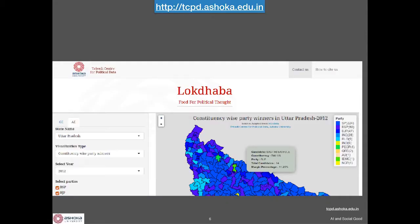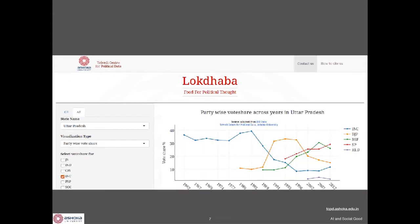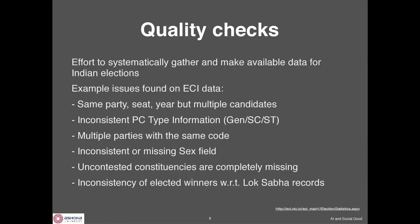There are maps, graphs, and so on, but behind it all is a lot of systematic quality checking of the data. For example, when we put together all the Election Commission data, we find inconsistencies like the same party, same election, same constituency having multiple candidates from the same party — which is not possible. So they have some data entry error or a problem in the ingestion process.